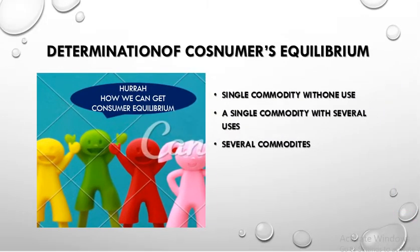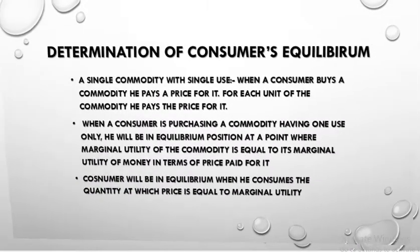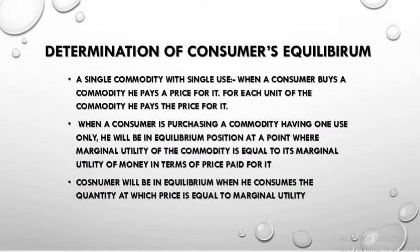Consumer equilibrium could be determined in different ways. There are three situations: single commodity with one use, a single commodity having many uses, and many commodities — that is, several commodities.